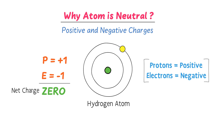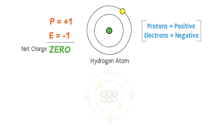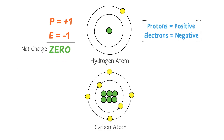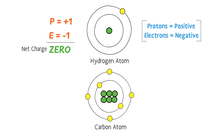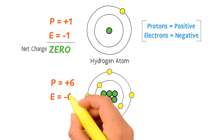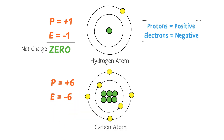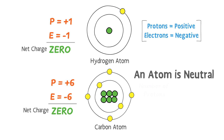Now consider a carbon atom. If you count the number of protons and electrons in the carbon atom, you will get that the number of protons equals +6 and the number of electrons equals -6. Thus, +6 and -6 cancel out each other. Hence, the carbon atom is a neutral particle. Therefore, we say that an atom is electrically neutral because it has equal numbers of protons and electrons.